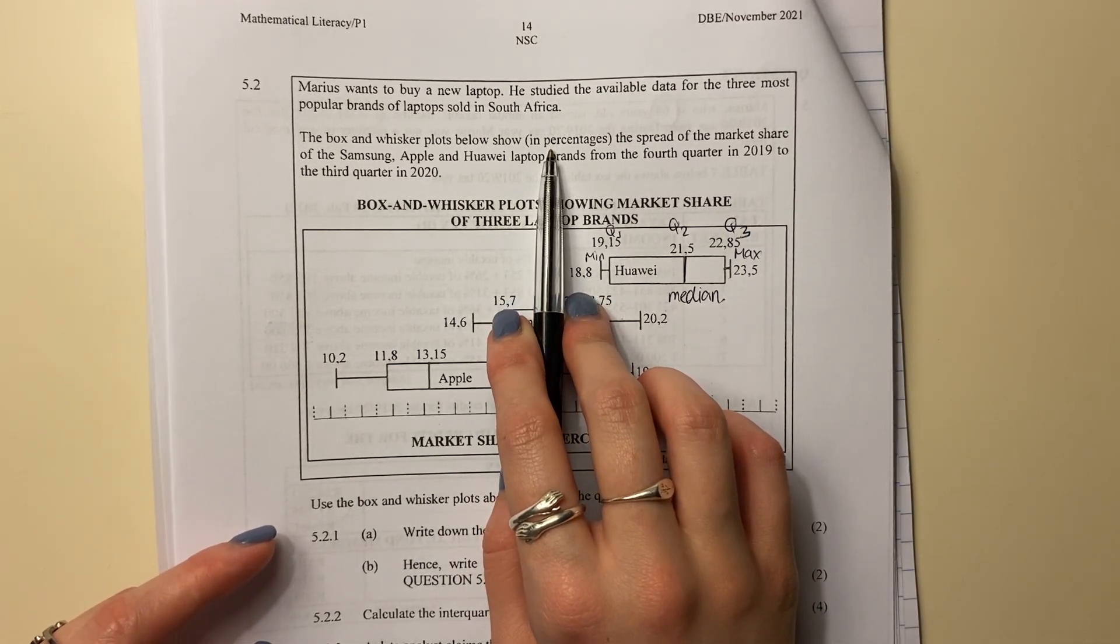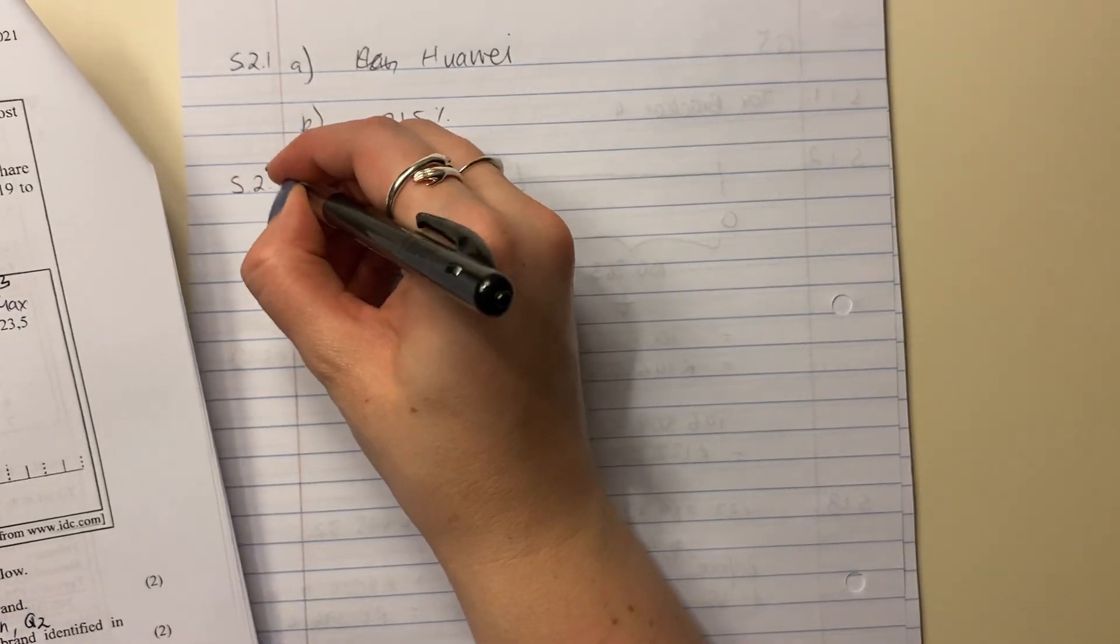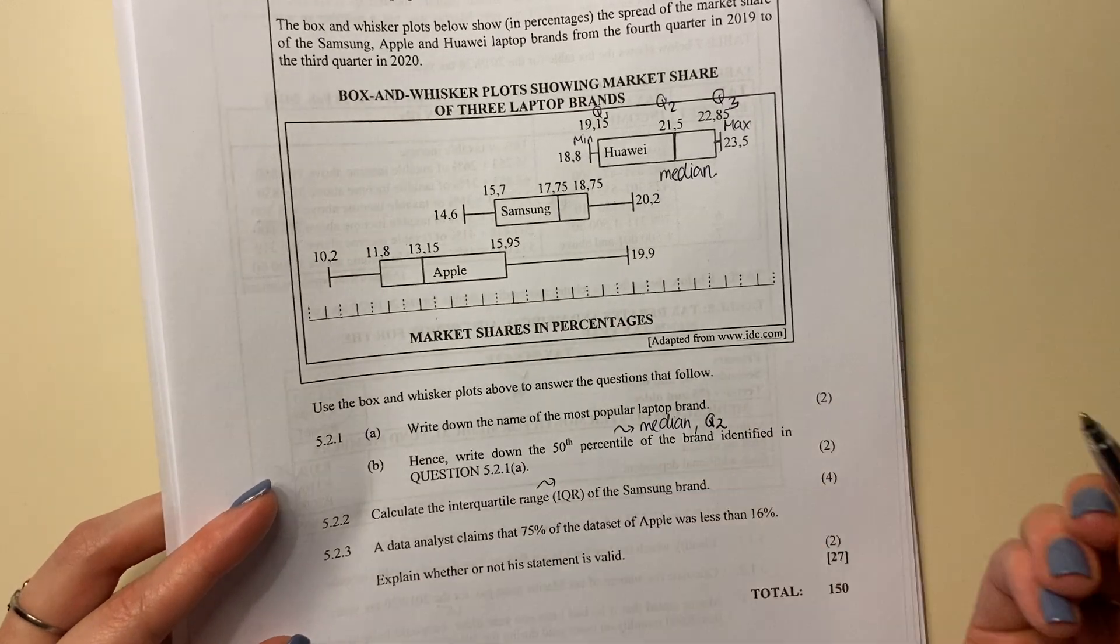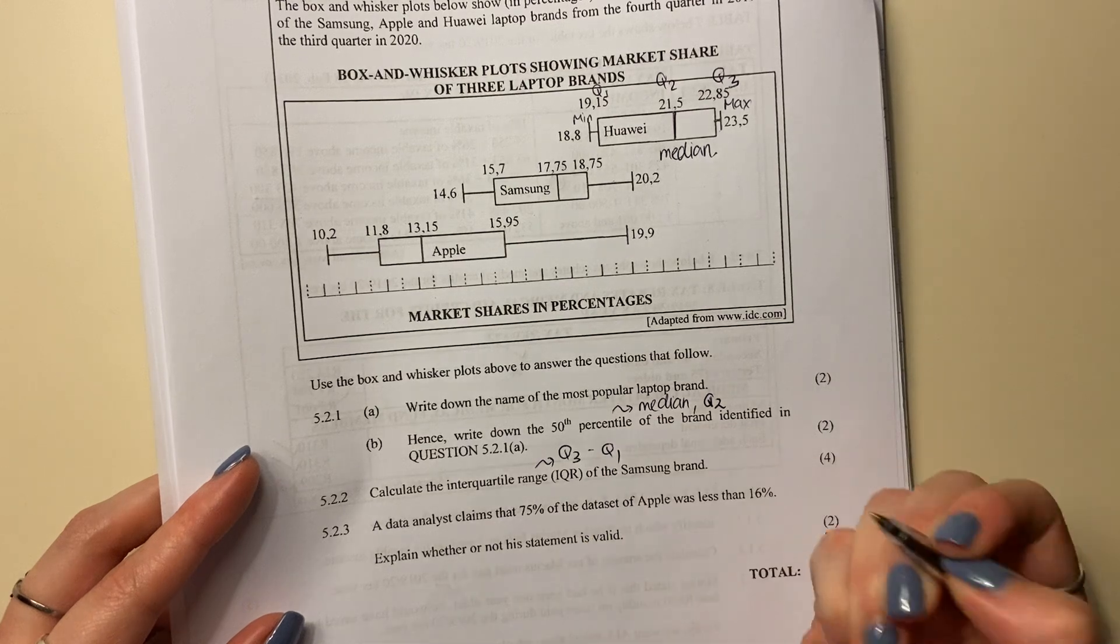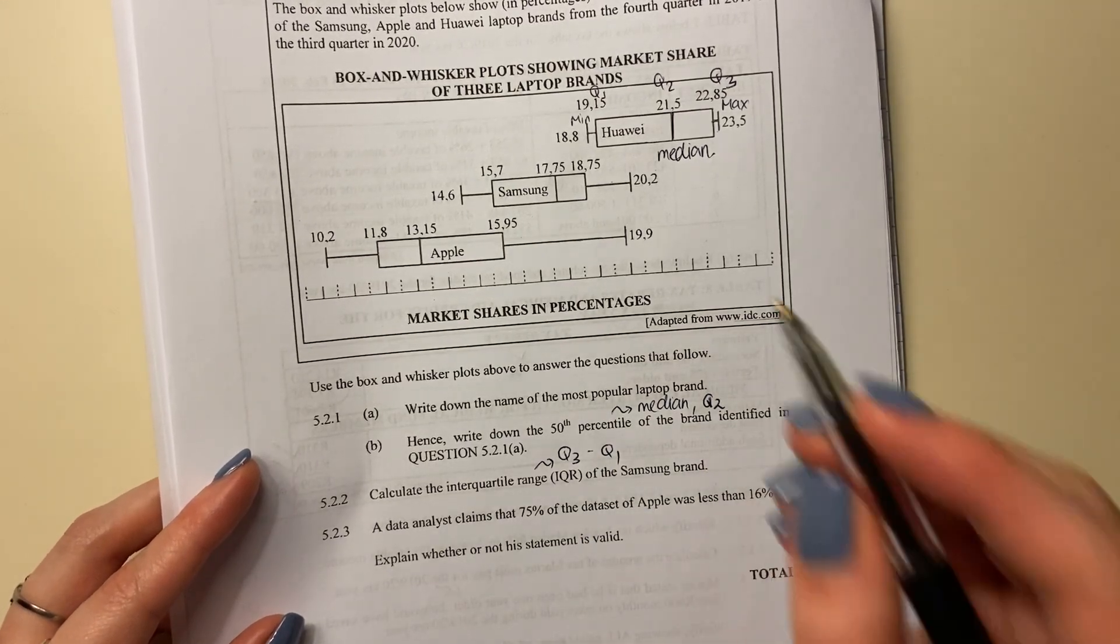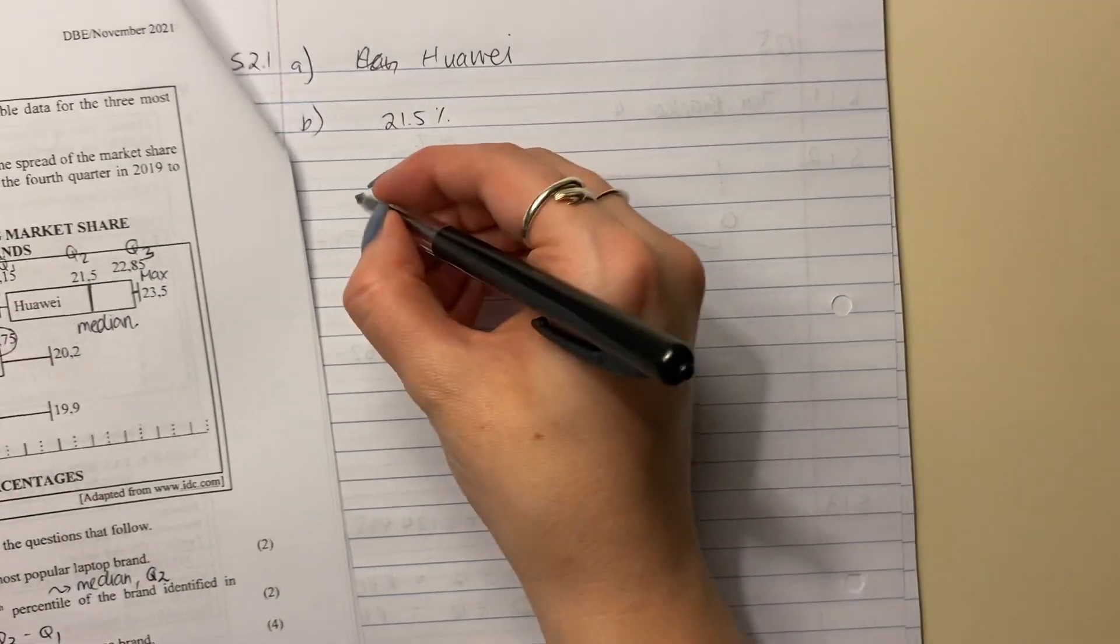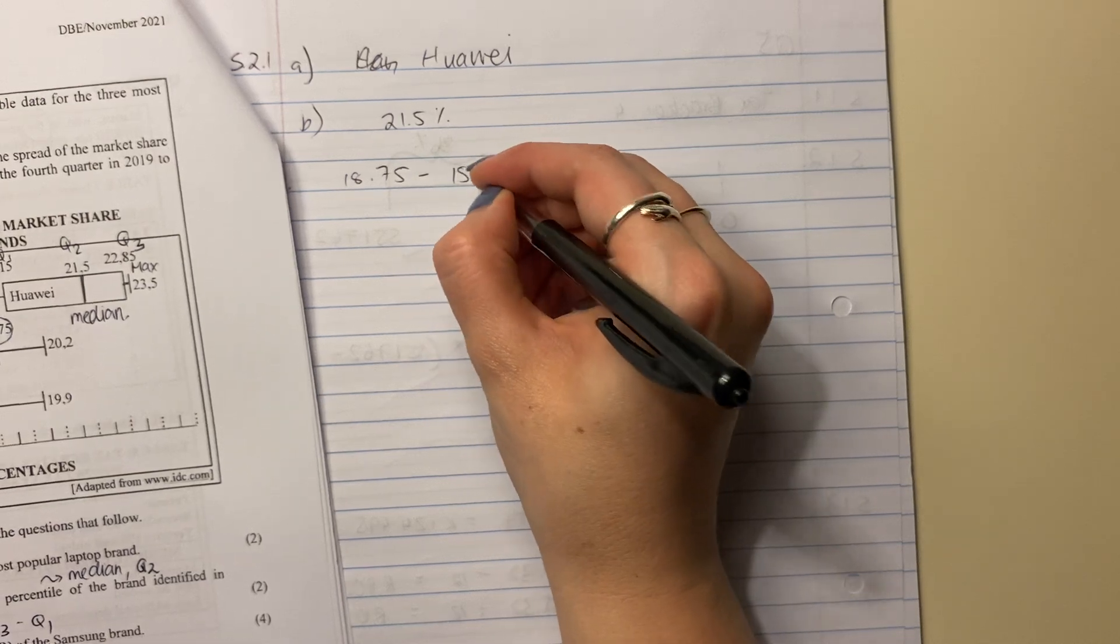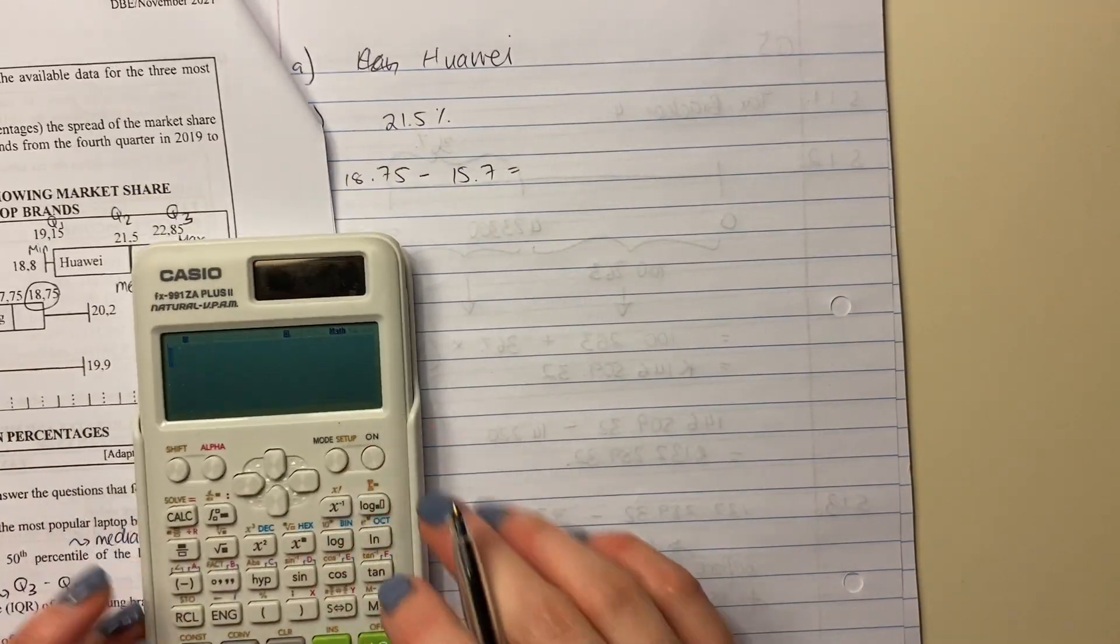5.2.2 calculates the interquartile range. Now what is the interquartile range? It's quartile 3 minus quartile 1. You should know that. Of the Samsung brand. So there's my quartile 3, there's my quartile 1. So I say 18.75 minus 15.7. Should be able to do that in your head if you're not tired.